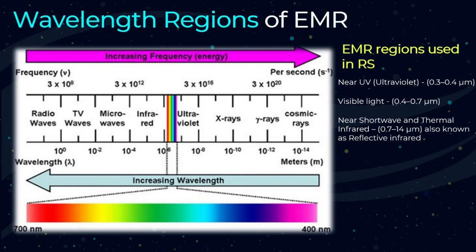Let's have a look at the wavelength regions of electromagnetic radiation. The wavelength regions have different names ranging from gamma ray, x-ray, ultraviolet, visible light, and infrared to radio wave.